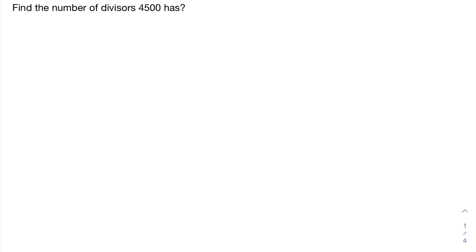Now, we're going to find the number of divisors 4,500 has by using prime factorization. The prime factorization of 4,500 is 2 to the power of 2 times 3 to the power of 2 times 5 to the power of 3.